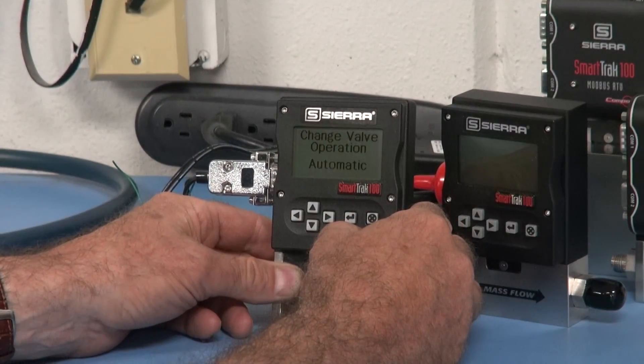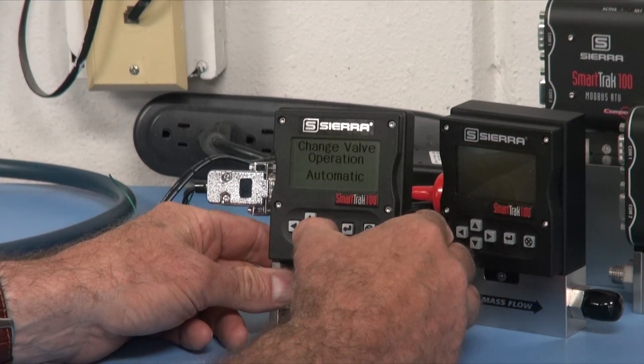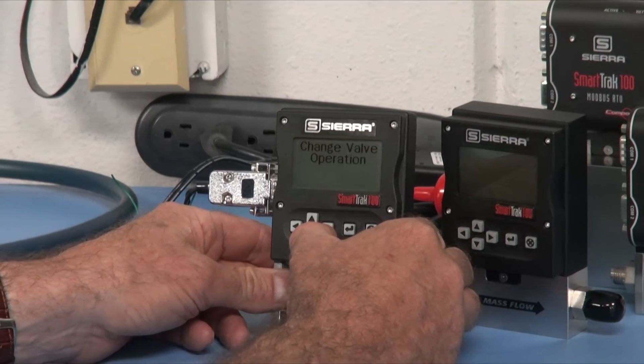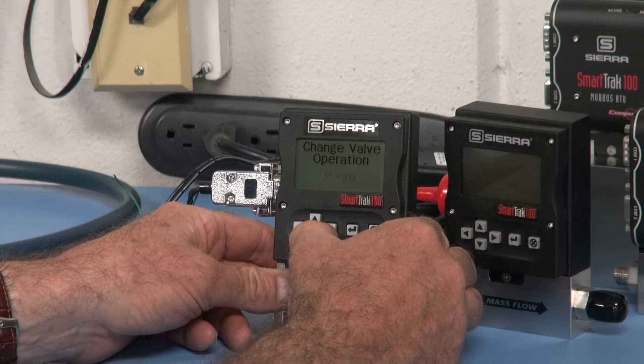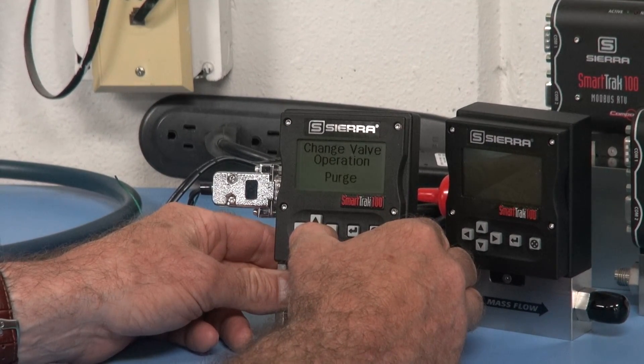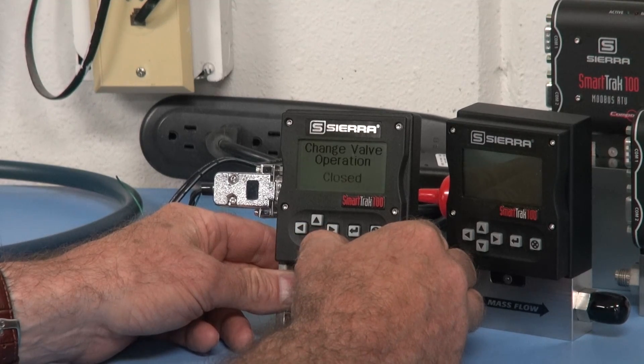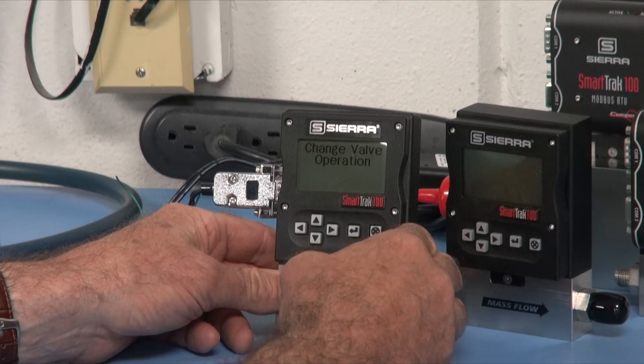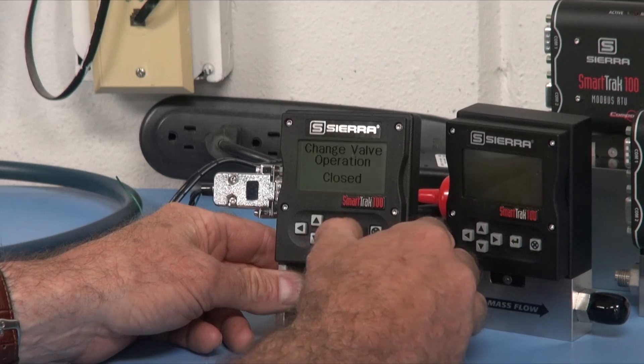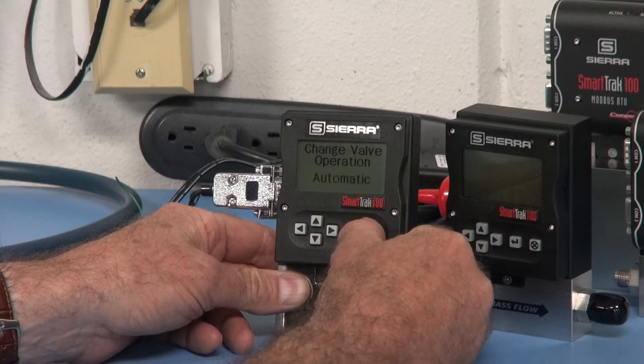Next menu, change valve operation. It can be automatic, it can be purge, which means it's open all the time for some function you want to run, or closed. In other words, it won't respond to a set point until you change it to automatic and press enter.